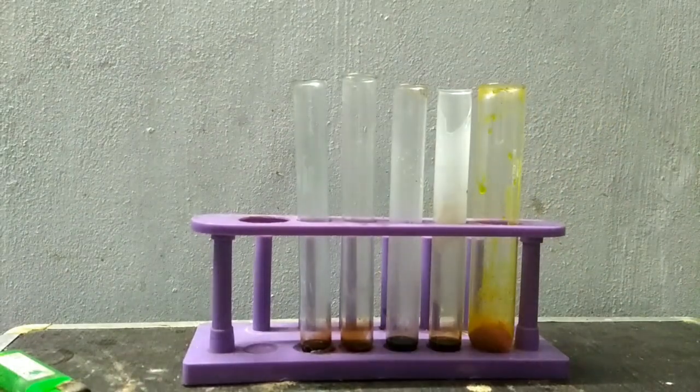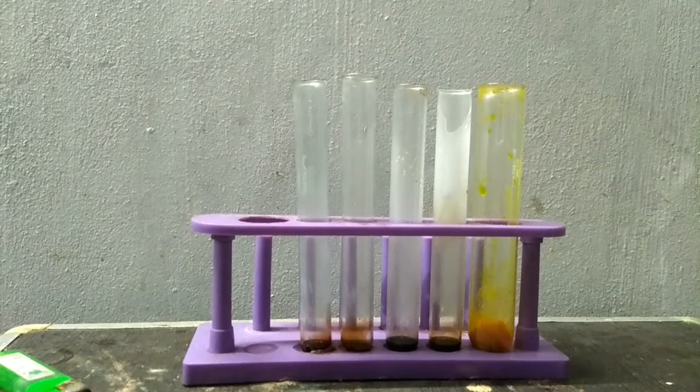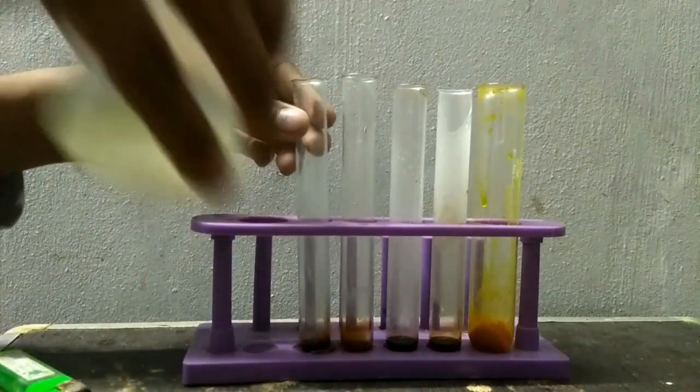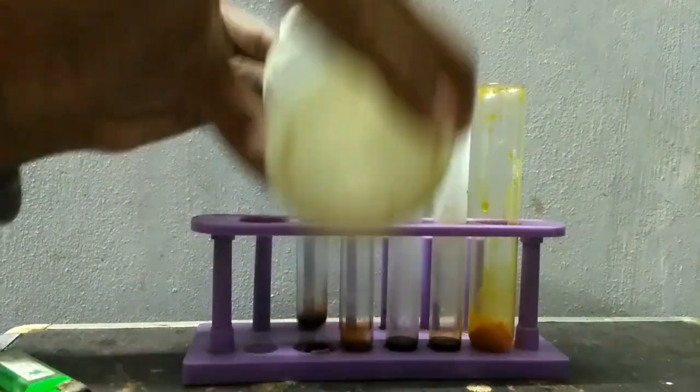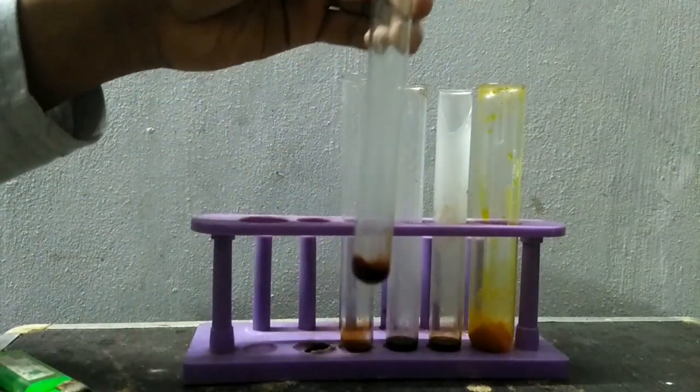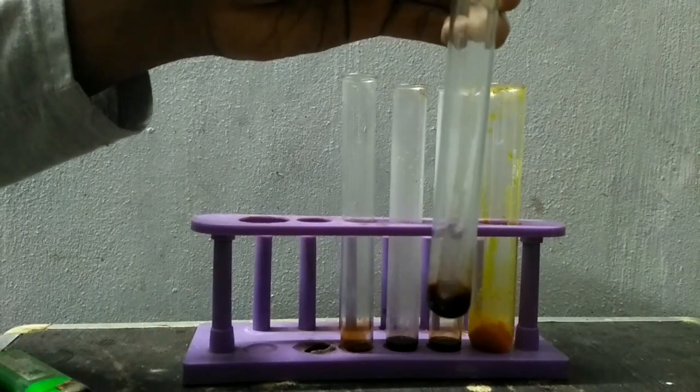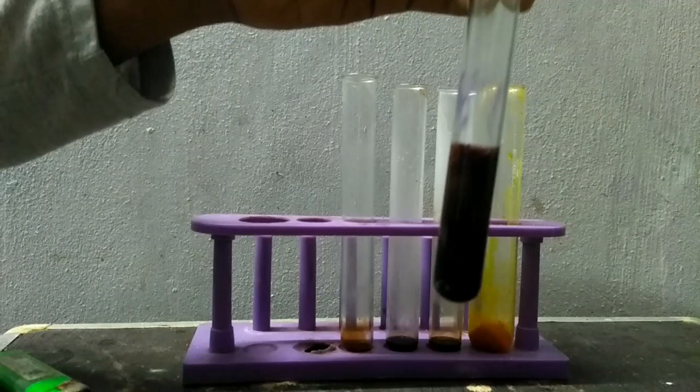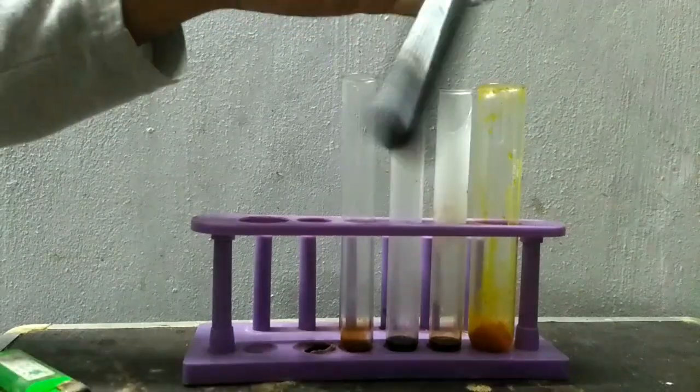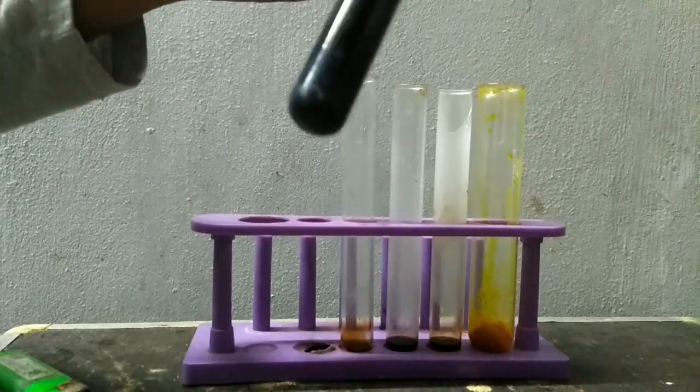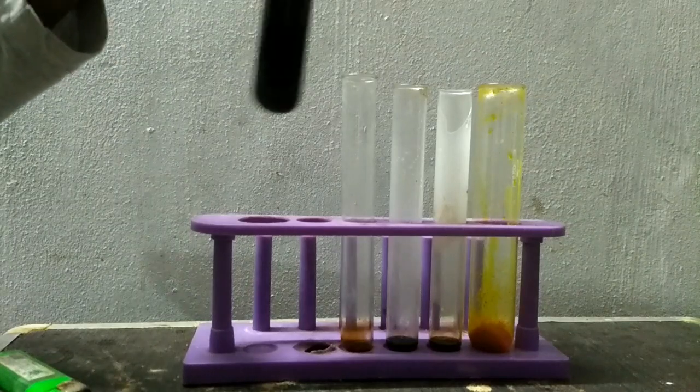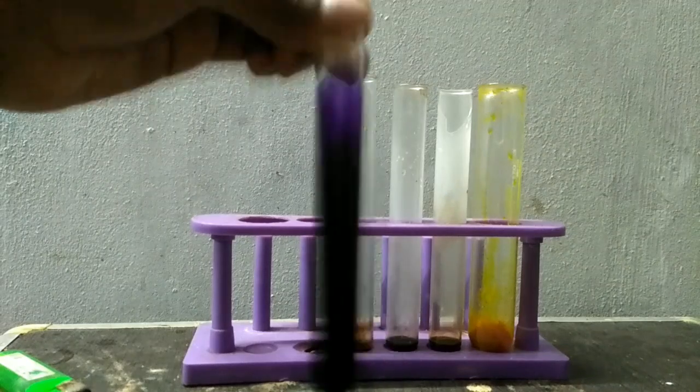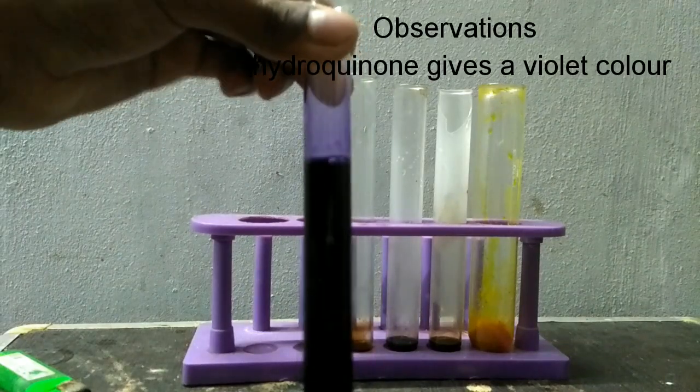Now in the second step we add sodium hydroxide to each one. First we will add to the hydroquinone one and we will see appearance of a violet color.